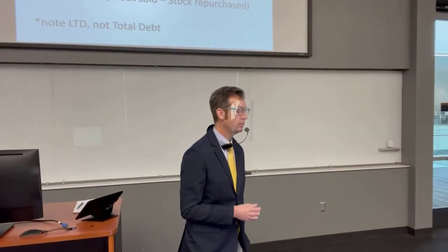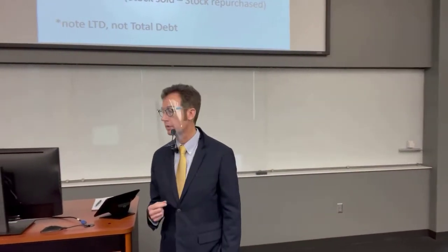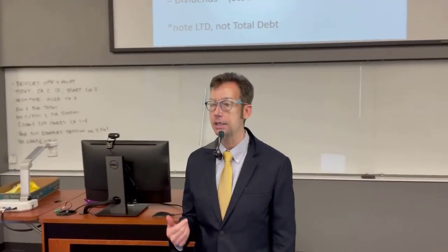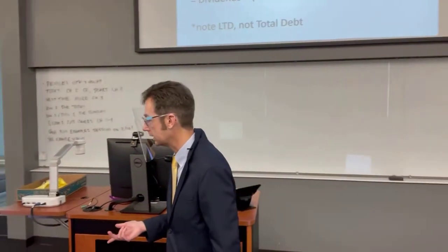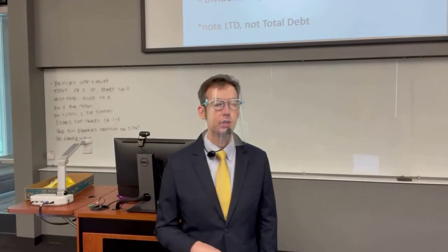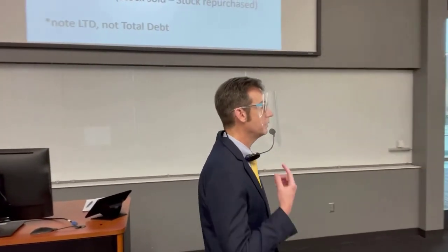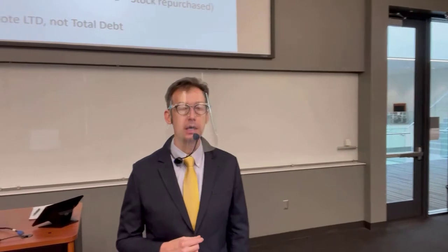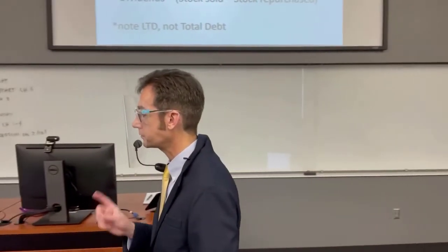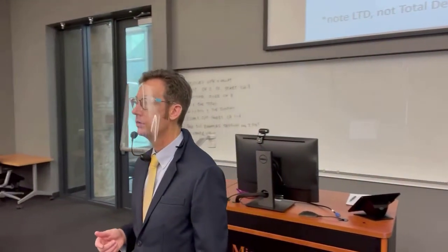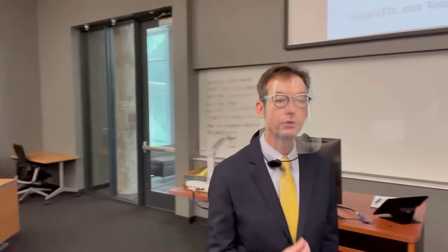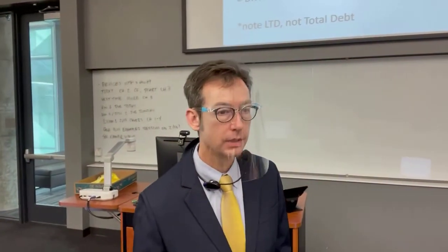What is CFB? We may also call it cash flow to creditors. Interest would be a cash flow to creditors because we're paying interest to people that loaned us the money. We then subtract the change in long-term debt. Any money that we borrow — if ending long-term debt is greater than beginning long-term debt — means we've borrowed additional money. That's cash flows from creditors, not to creditors. That's why it has a minus sign.